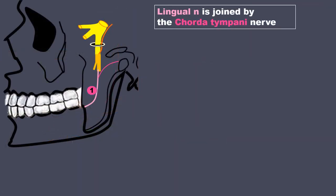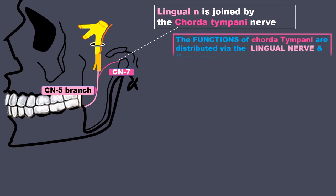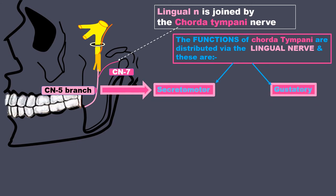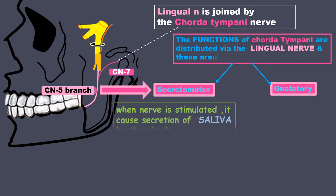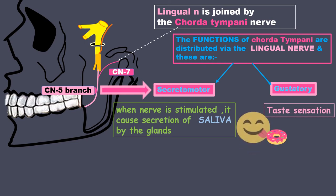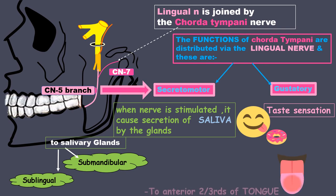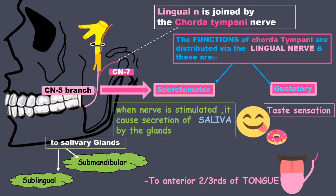The lingual nerve is joined by the chorda tympani nerve — 7 meets 5. The functions of the chorda tympani are distributed via the lingual nerve and these are secretomotor and gustatory. Secretomotor means when the nerve is stimulated it causes secretion of saliva. Gustatory means taste sensation. It is secretomotor to the submandibular and sublingual salivary glands, and taste sensations from the anterior two-thirds of the tongue are carried via the lingual nerve through the chorda tympani to the brain.